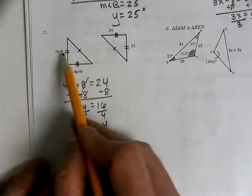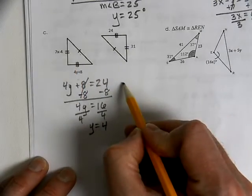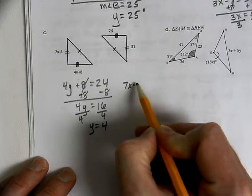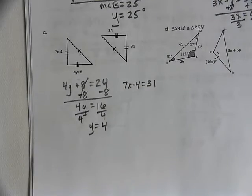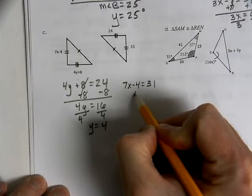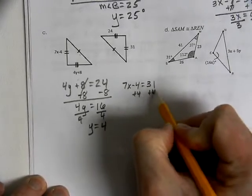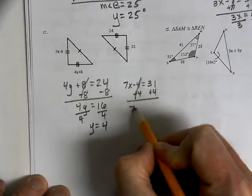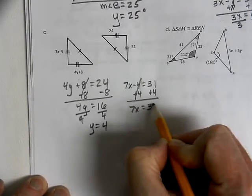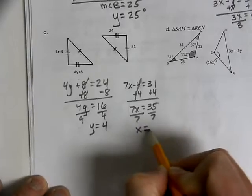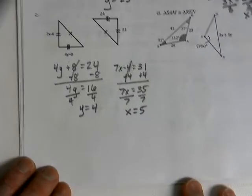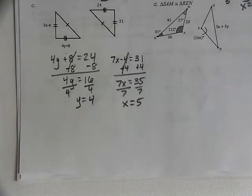Then, we can look at the two tick marks. And, we get 7X minus 4 equals 31. Plus 4, plus 4. 7X equals 35. Divide by 7. X equals 5. So, Y is 4 and X is 5.